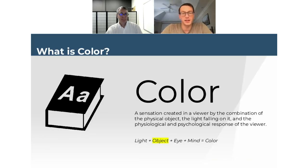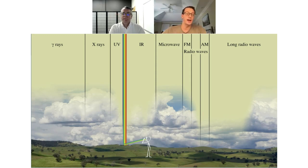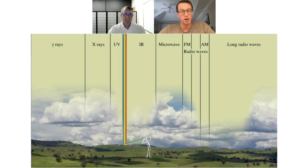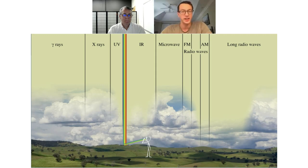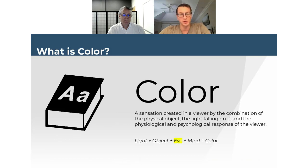Now let's look at the object. The object is usually the most straightforward component — it's what we focus on most when learning about color. The entire visible spectrum hits that green grass, but only parts of that spectrum reflect off it. The grass absorbs most of the light and only scatters back the wavelengths we associate with green, which then reach your eye, allowing you to perceive the grass as green. The object's reflectivity — what it absorbs or reflects — plays a big role in color.